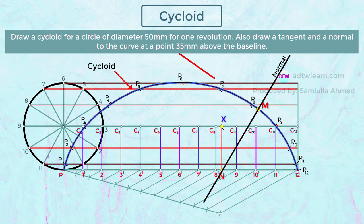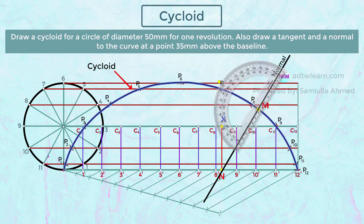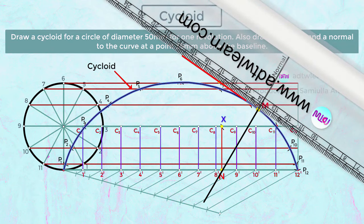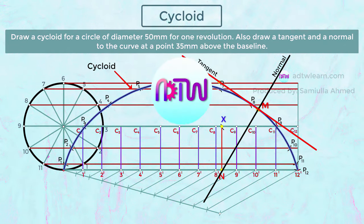Now draw a line perpendicular to this normal line — this will be the tangent to the cycloid curve. The angle between the normal and the tangent must be 90 degrees. To do so, take a protractor, align it, mark the point, and draw a line through these two points. This is the tangent to the curve. I hope you have understood how to draw a cycloid of a circle. If you are new to my channel ADTW Learn, click the subscribe button and turn on all notifications to get all my latest videos.